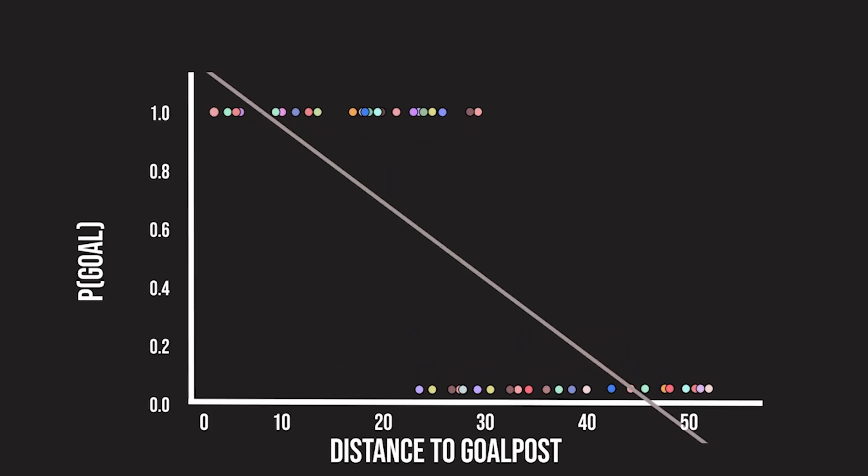We can limit any value greater than 1 to be 1 and values lower than 0 to be 0, and linear regression might still work. But let's see why logistic regression is more suitable and yields better results than linear regression when it comes to binary classification tasks.